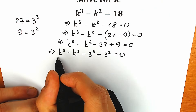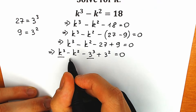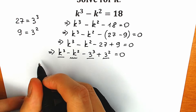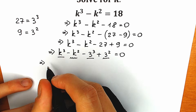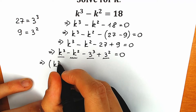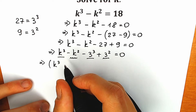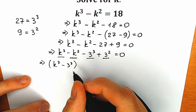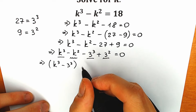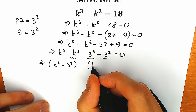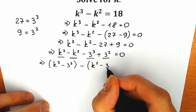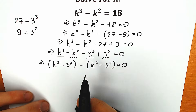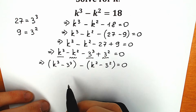So we have k cubed minus 3 cubed as our first parenthesis, and then minus k squared minus 3 squared as our second parenthesis, equal to zero. If we look closely, from a different perspective, right here we have difference of cubes and right here we have difference of squares.